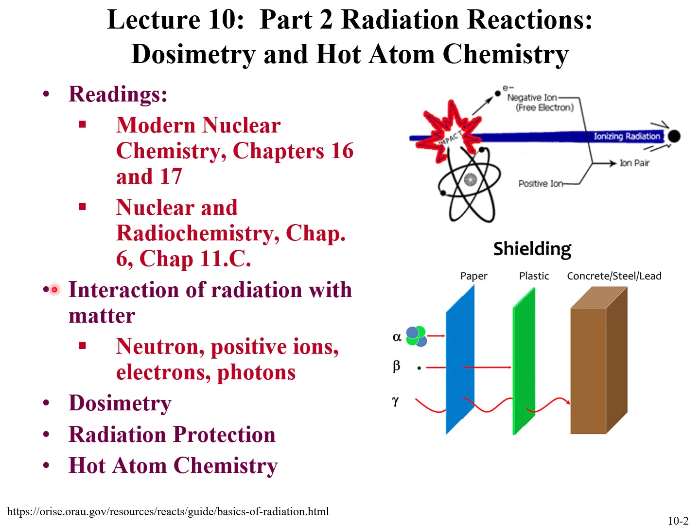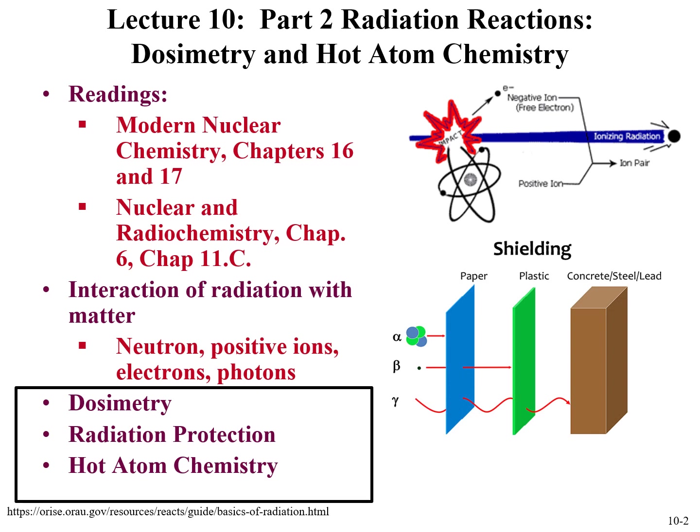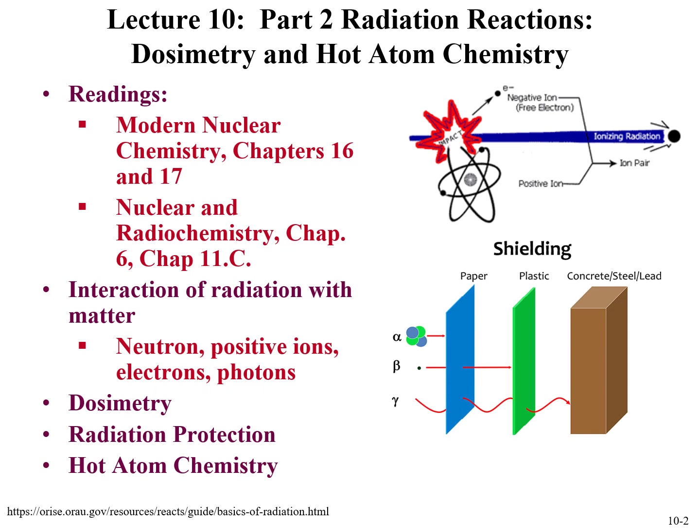In the first part, we discussed the interaction of radiation with matter. In the second part, we explored the role of neutrons, positive ions, electrons, and photons — similarities and differences in their interactions with matter. In this lecture, we're going to focus on dosimetry, how we can quantify that interaction of radiation with matter, how we can use that understanding in radiation protection, and then we'll end with a discussion on hot atom chemistry, where a nuclear reaction occurs and induces a chemical reaction, which is the first step in a chemical process.